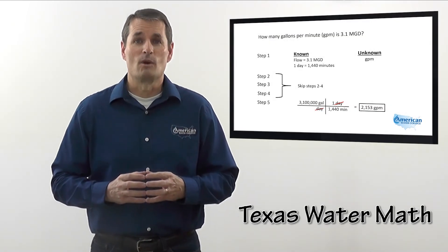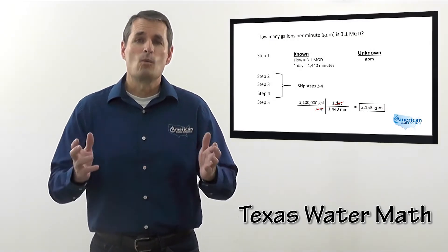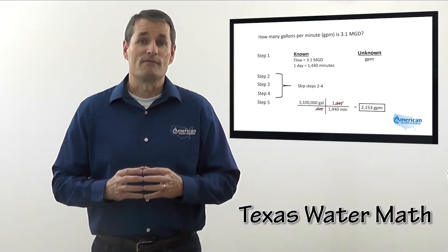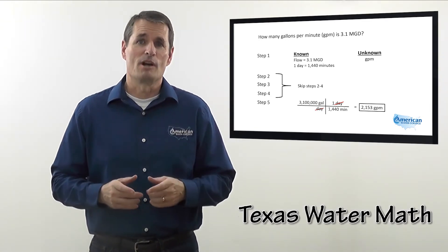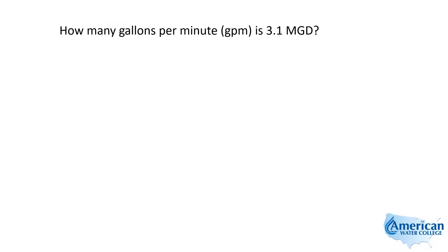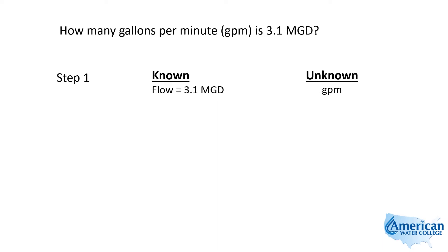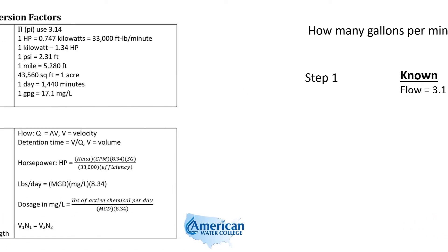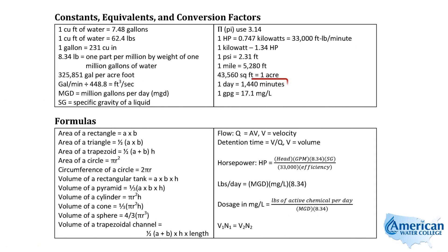I'm Joe Kirshner with American Water College. Watch as I use my five-step approach to solve this problem: how many gallons per minute is 3.1 MGD? So we're looking for GPM, and they gave us our flow as 3.1 MGD.